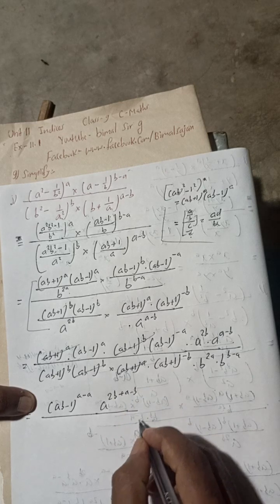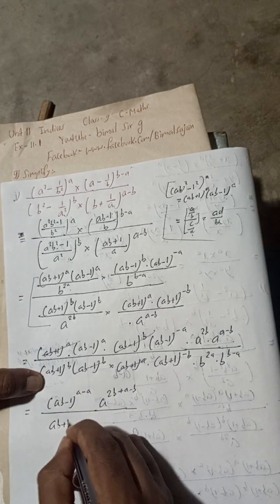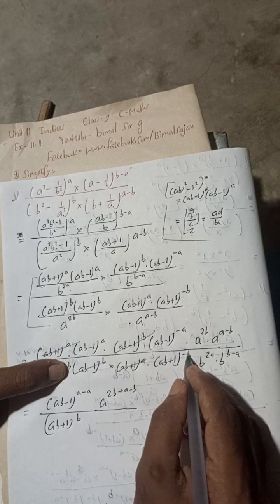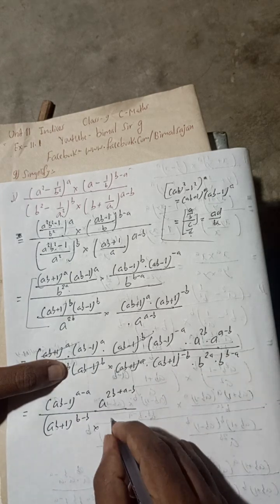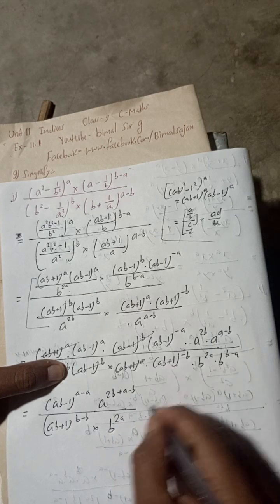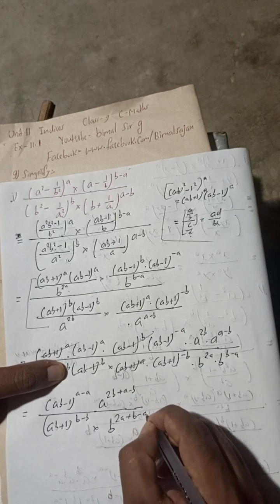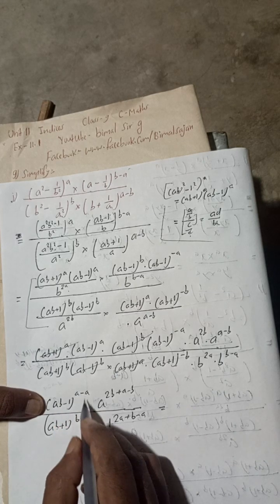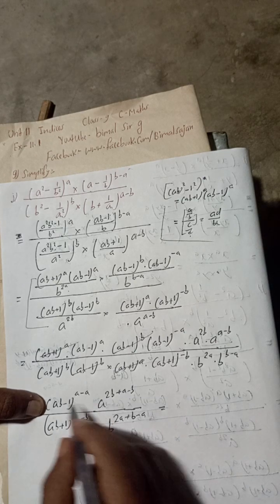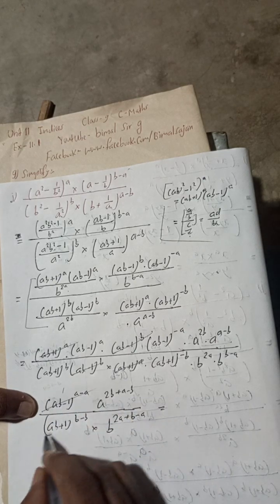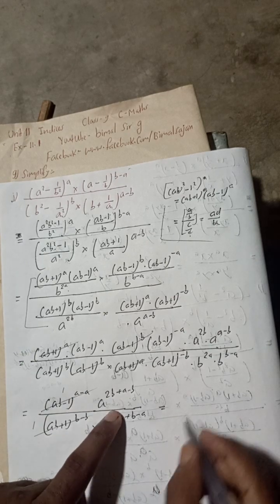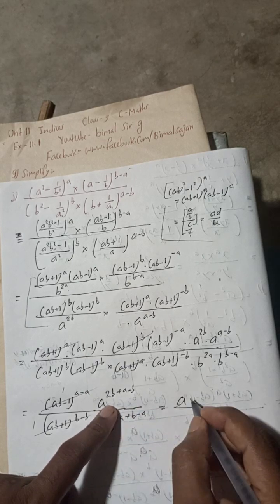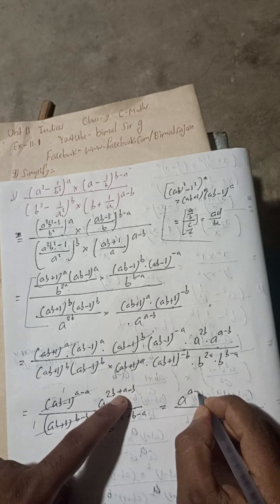Same here: (ab+1) to the power b and (ab+1) to the power minus b — same base, so powers b and −b cancel to 0, giving 1. And b to the power 2a plus b minus a... Now a to the power: 2b minus b = b, and a minus a... so a to the power (a+b). And b to the power 2a minus a = a, so b to the power (a+b).